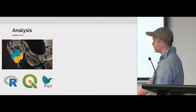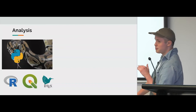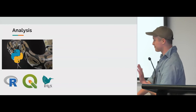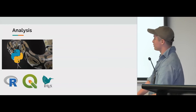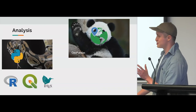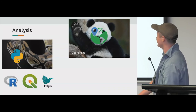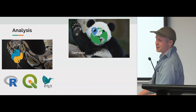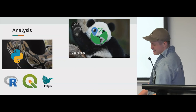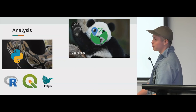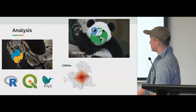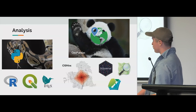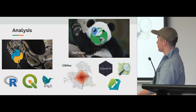LaTeX was a godsend for figure placement but it was a bit of a learning curve. A lot of my programming was done in GeoPandas — quite simple to use. OSMnx was great for getting road data from OpenStreetMap and some network analysis. I also used tidyverse in R for a lot of my plots, LINZ data service and OpenStreetMap as data sources.